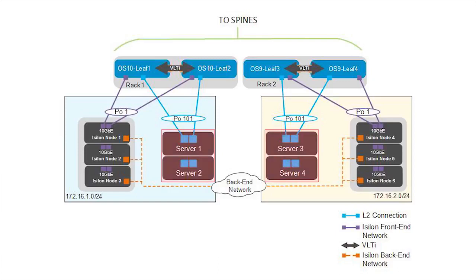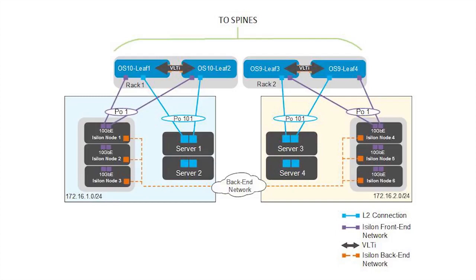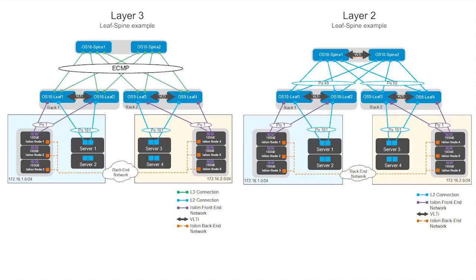In this deployment, the R730XD servers are used as compute nodes. Three Isilon nodes and two servers connect to each leaf pair. The Isilon nodes connect on a back-end network through two InfiniBand switches creating a single 6-node cluster. This video focuses on the Isilon X210 deployment using Layer 3 leaf-spine topology and Layer 2 leaf-spine topology.